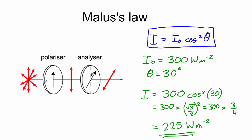So the intensity of the light passing through this particular filter when it's at 30 degrees is 225 watts per square meter if the original light was 300 watts per square meter. That is Malus's law.